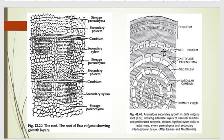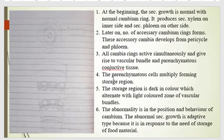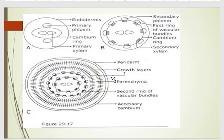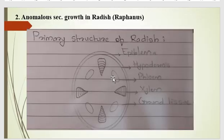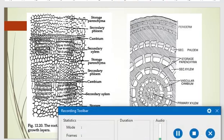This is all about beetroot. I hope all of you are clear about how adaptive modifications in beetroot are observed according to the storage tissue. In the next video, we will discuss anomalous secondary growth in radish.